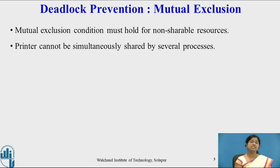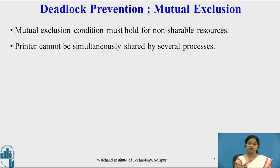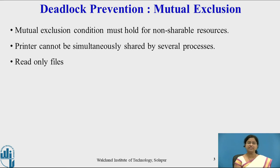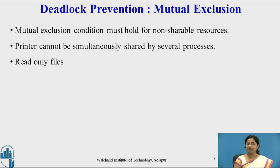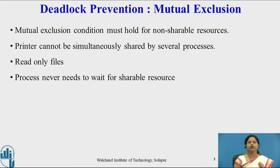The printer cannot be simultaneously shared by several processes. It does not print one page for one process and another page for another process. Once it gets the task of the first process, it finishes it and then takes the next. However, for shareable resources such as read-only files, no process will wait — whenever a process requests that file, it will get access easily. So processes never need to wait for shareable resources.